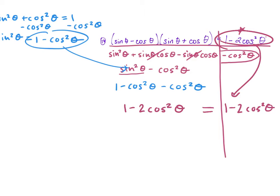If you ever get confused on how to handle expressions like sine times sine, think about it as x times x, which is x². When you have negative x minus x, that's negative 2x. If it helps, just think about everything in terms of x. Once you get past the trig, it's really just simplifying algebra.